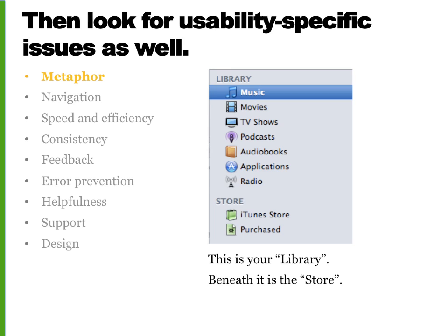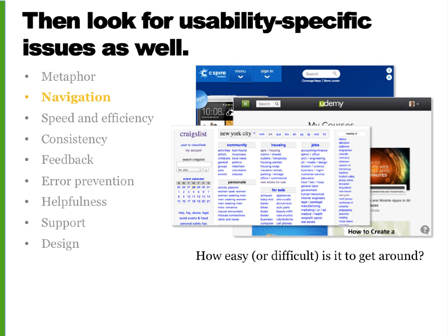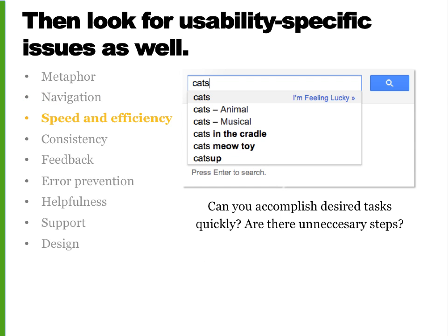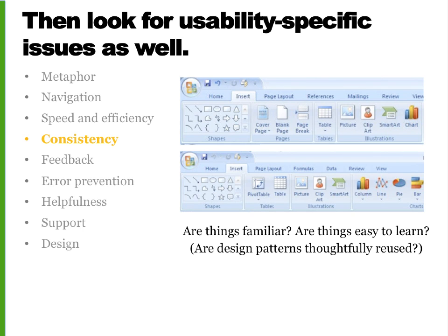Metaphor: Is it intuitive? Does it build on what you already know and use things you're familiar with? Navigation: How easy or hard is it to get around? Do you know where you are? Speed and efficiency: Are tasks as quick as they should be? Are there extra unnecessary steps? Consistency: Are things consistent? Could things be made more simple? Is it learnable? Are design patterns thoughtfully reused? Are there clear patterns and meaningful conventions?